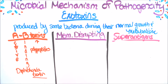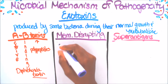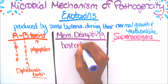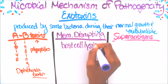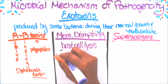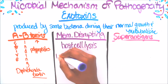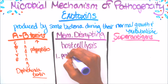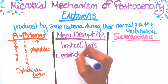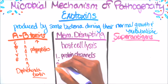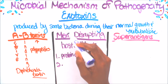Membrane disrupting toxins lyse the host cell. They disrupt in two ways: one, they form protein channels, and two, they disrupt the phospholipids in the membrane.